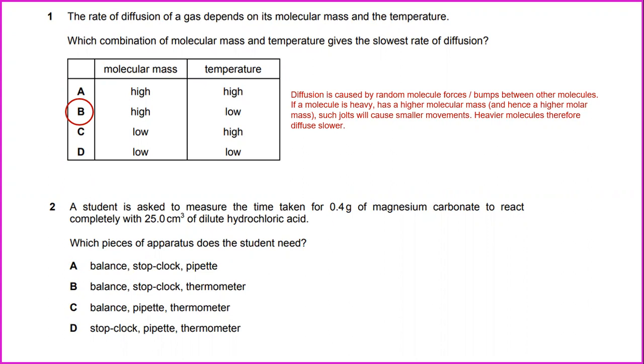The student is asked to measure the time taken for 0.4 grams of magnesium carbonate to react completely with 25 cm³ of dilute hydrochloric acid. Which pieces of apparatus does the student need? You need a balance, a stop clock, and a pipette.